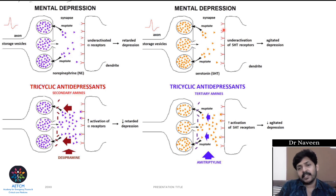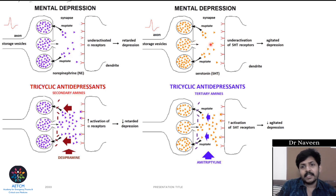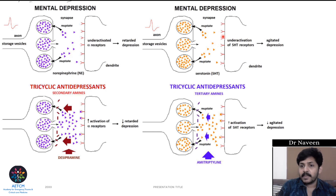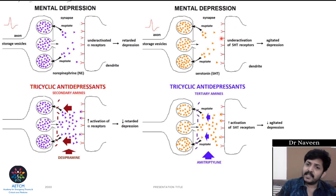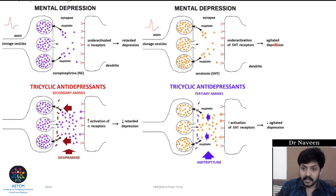Similarly, in the serotonin synapse, the axon vesicles contain serotonin (5-hydroxytryptamine, 5-HT), which is released and binds to 5-HT receptors on the dendritic membrane. In depression, there is less serotonin in the synapse, most is taken back into the presynaptic membrane, and the receptors remain under-activated. Under-activation of 5-HT receptors leads to agitated depression. Retarded depression and agitated depression are different variants of depression.